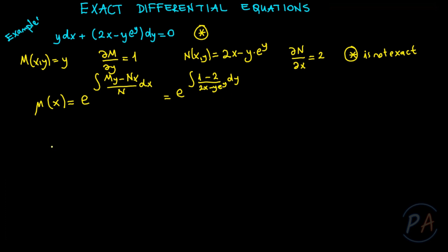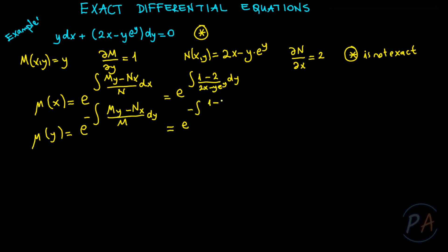Let me write the other possible integrating factor as a function of only y: exponential of minus the integral of (M_y minus N_x) over M dy. Substituting the values, that is the exponential of the integral of (1 minus 2) over y dy, which equals the exponential of the integral of 1/y dy, giving e^(ln y) = y.